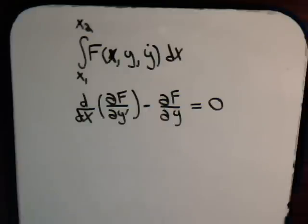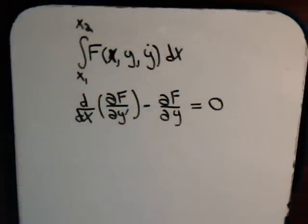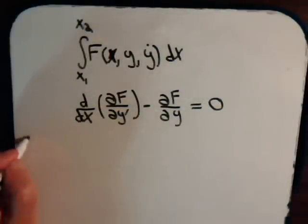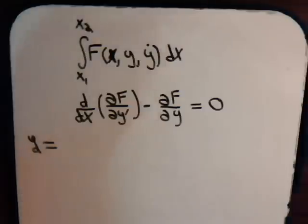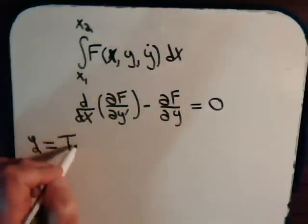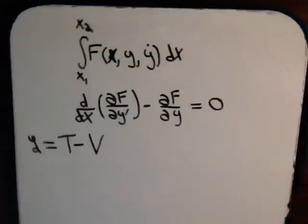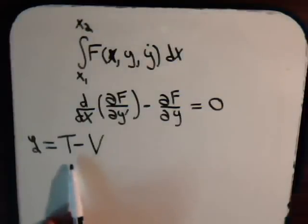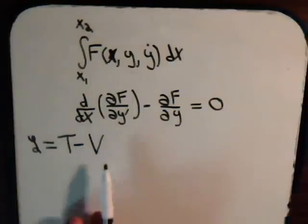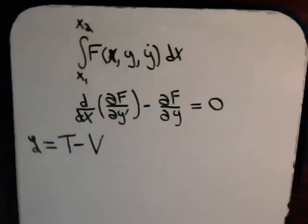What we're going to do in this video is exactly the same thing, except the functions we're going to be working with are Lagrangian functions. The Lagrangian is simply the difference between kinetic energy and potential energy — the kinetic energy of a particle or system minus its potential energy.